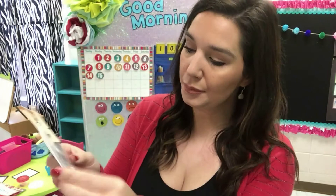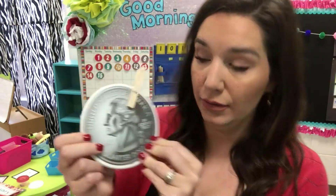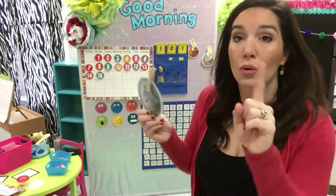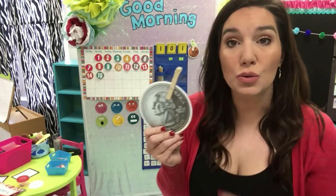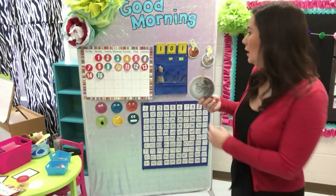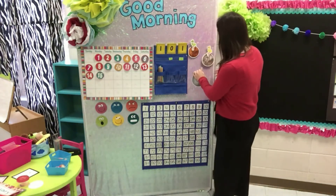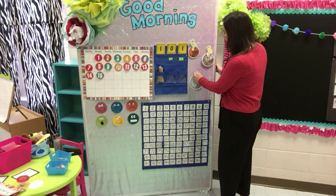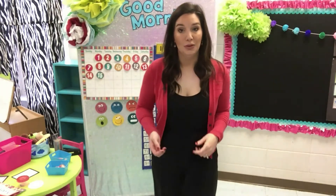I thought we might learn about the quarter this week — there he is, George Washington on the front. The back has one of the symbols of America, the bald eagle, on it. The quarter is the biggest coin that we have and it's worth twenty-five cents, where a penny is only worth one and a nickel only worth five. So the quarter is worth the most and it's also the biggest. The rhyme goes: quarter, quarter, big and bold, you're worth twenty-five, I am told.